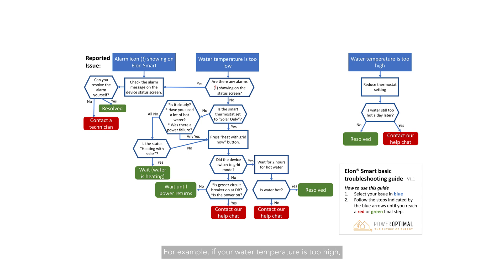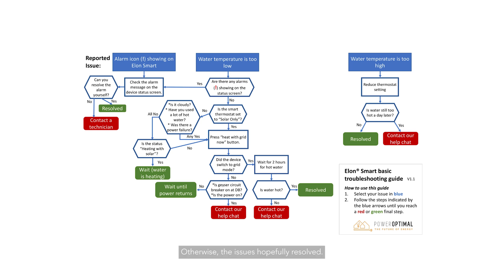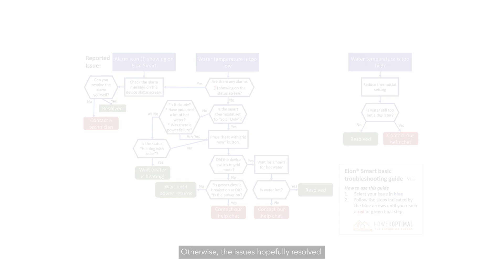You follow the steps until you reach a red or green final step. For example, if your water temperature is too high, you can reduce the thermostat setting in the Elon Smart app. If the water is still too hot a day later, please contact our help chat. Otherwise, the issue is hopefully resolved.